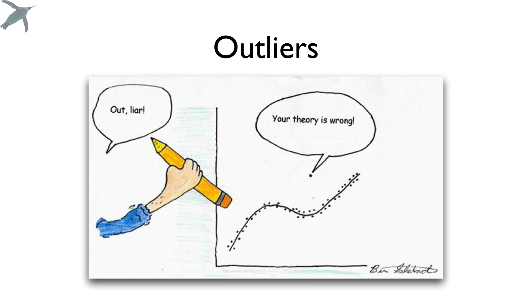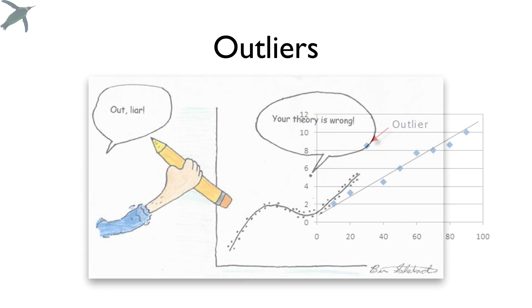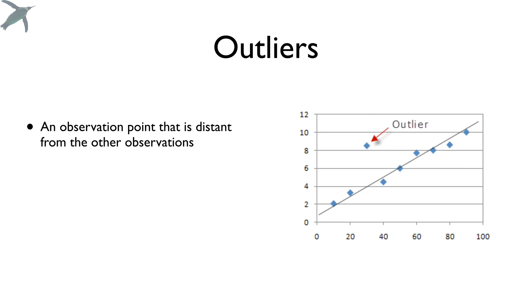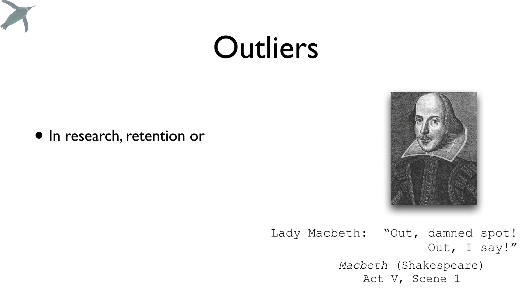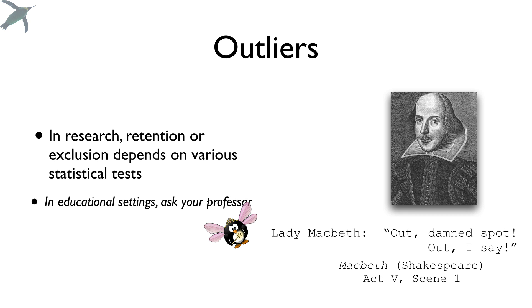Next, what about outliers? What are you going to do with data points that are way out of range compared to everybody else? Usually, they are due to experimental error or just regular variability. The reality is in research, whether you retain or exclude an outlier depends on statistical tests. My point is you don't get to choose. Things like Q tests and so forth are what we use to determine whether or not we keep them. In an educational setting, I would say ask your professor about your outliers.